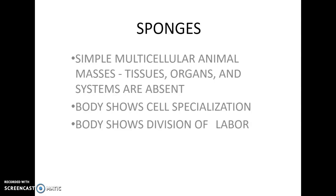Sponges are very simple multicellular animals. They don't have any tissues or organs. Remember: cells make tissues, tissues make organs, organs make systems, systems make organisms. This one's very simple — it just has cells; it doesn't have any type of organs. Number nine: cells in the sponge's body show cell specialization and division of labor — certain cells do certain jobs, which we'll get into in a moment.